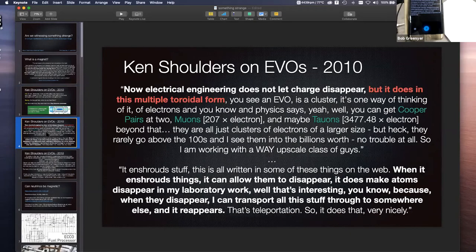Again, on Ken Shoulders, he said, 'Now, electrical engineering does not let charge disappear, but it does in this multiple toroidal form. You see, an EVO is a cluster, it's one way of thinking of it, of electrons. And you know, physics says, yeah, well, you can get Cooper pairs at two muons, 207 times the electron, and maybe tauons, 3,477 times the electron. Beyond that, they are all just clusters of electrons of a larger size. But heck, they rarely go above 100s, and I see them into the billions worth. No trouble at all. So, I am working with a way upscale class of guys.'